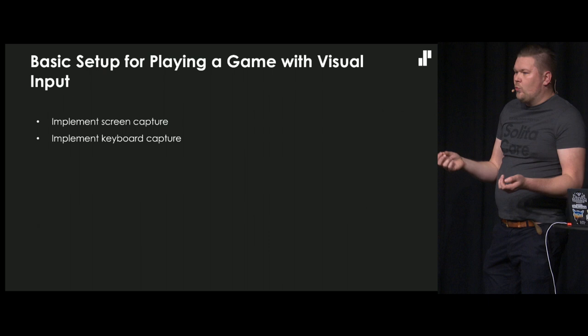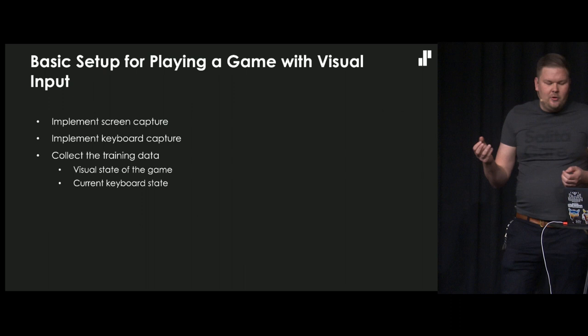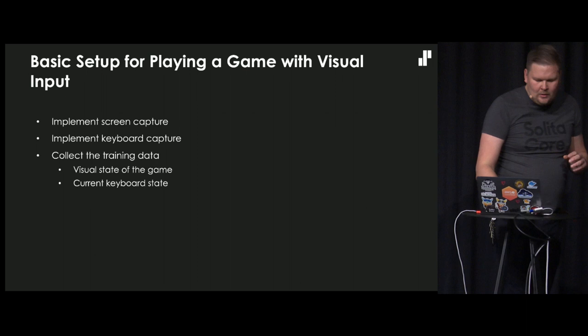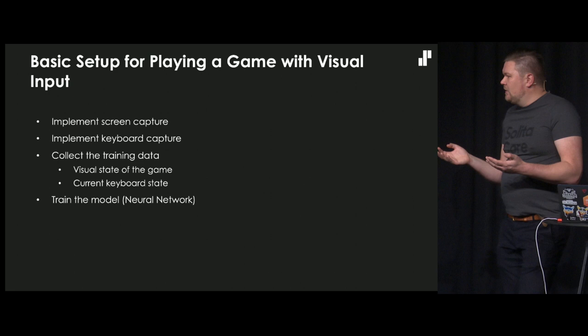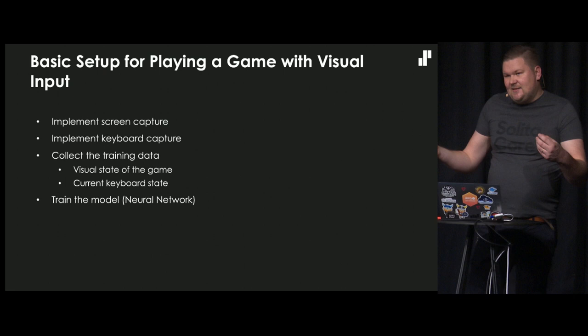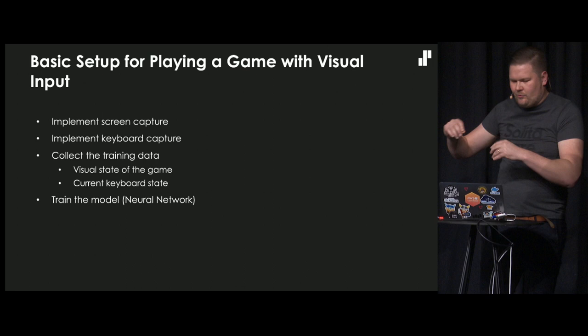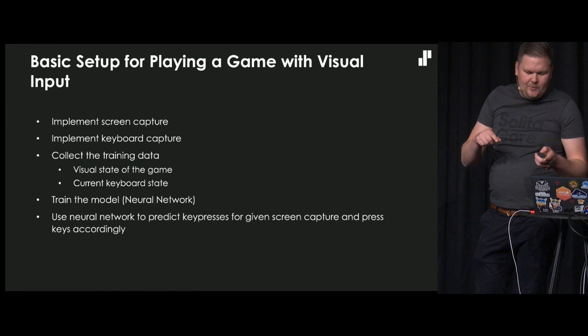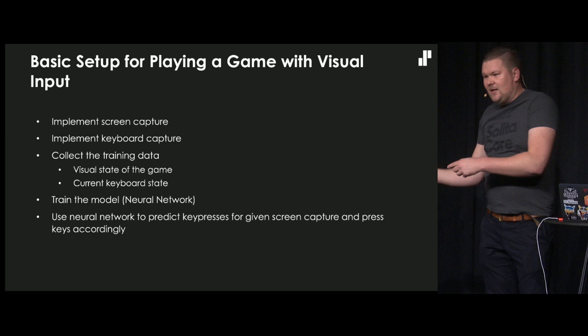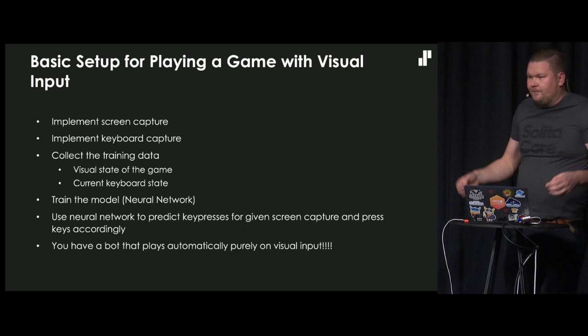When you collect your training data, you need to get the visual state of the game and current keyboard state. When you have the data, you train the model - the neural network. Some people call it fitting the model. Then when you have the model, you can use it again with the same screen capture to send input to the game - just send the image and you get a prediction of what the player should do. And then you have an autonomous playing robot or bot.